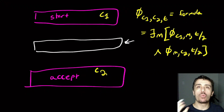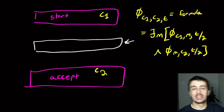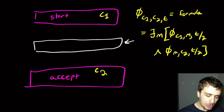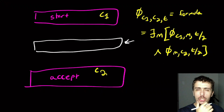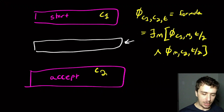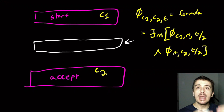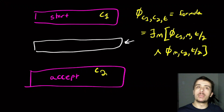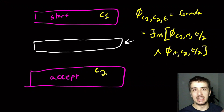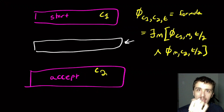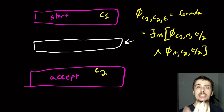We need the formula to be polynomial in size relative to the original input. The problem is that at each level of recursion the formula doubles in size. If there are m levels of recursion, the formula becomes 2^m in size, which is exponential. However, we can leverage 'for all' quantifiers to keep the formula polynomial in size.